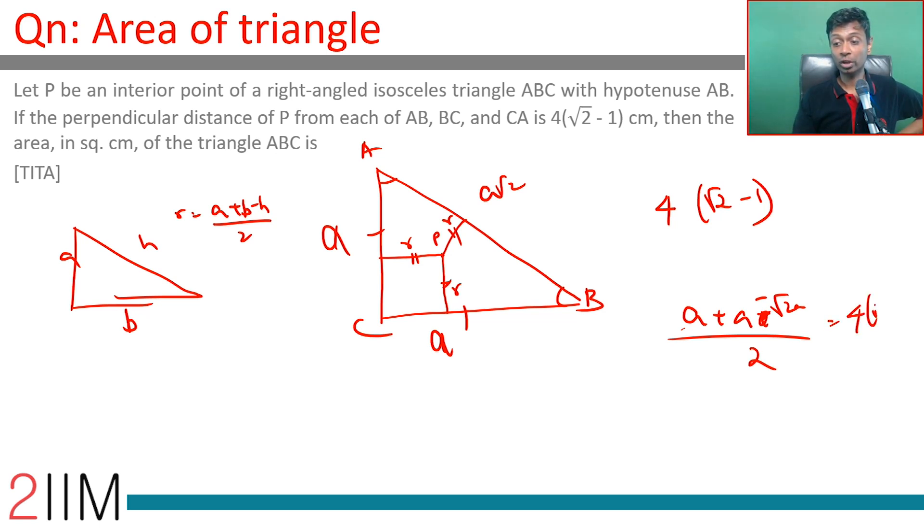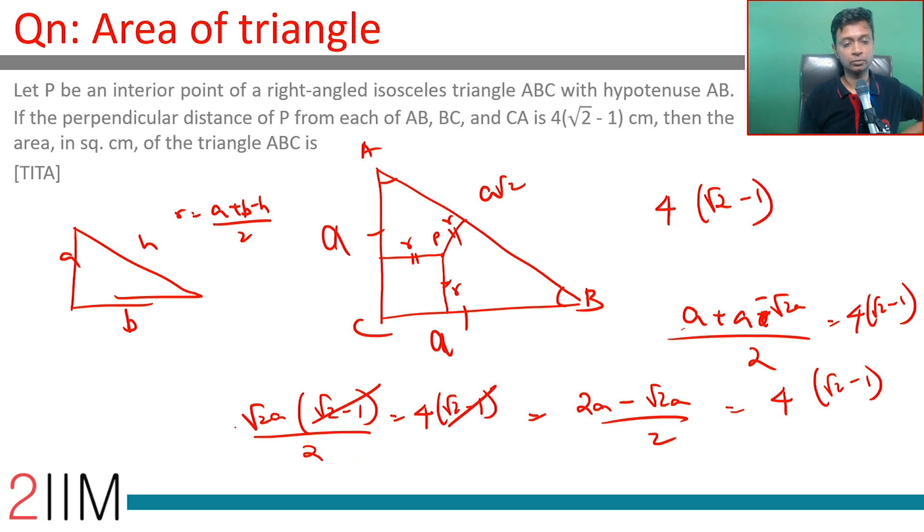Setting a(2 - √2)/2 = 4(√2 - 1), I can rewrite this as √2a(√2 - 1)/2 = 4(√2 - 1). Simplifying gives a/√2 = 4, so a = 4√2.